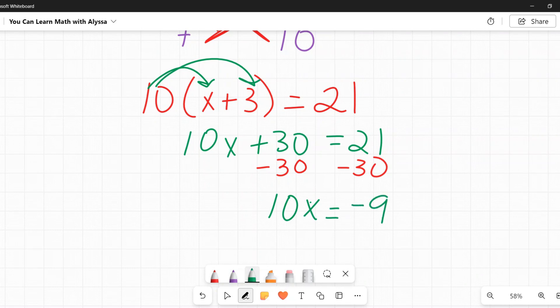To solve for x, I need to get rid of this 10 by dividing by 10. And when I divide both sides by 10, I get my final answer of x equals negative 9 tenths.